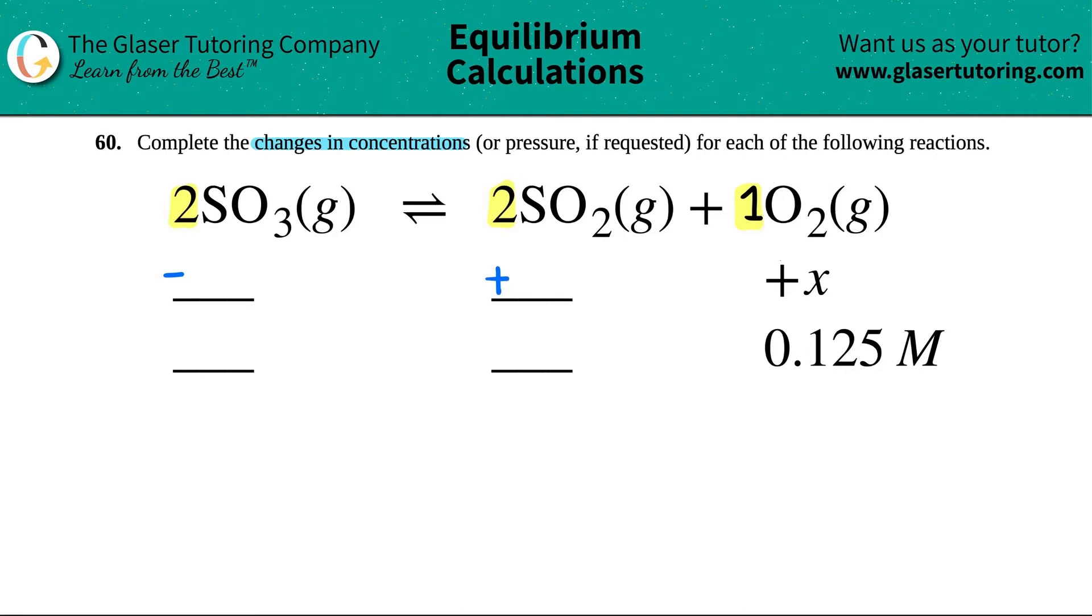So for the O2, since there was 1, it would be plus 1X. And if there's a 1X, we usually don't put the number there. But now since we have different coefficients, we have to put the number in front. So this would be plus 2X, right? Because this was a plus 1X, because the 1 just represents what the coefficient is. So this would be plus 2X, because I have 2 times the amount. And then for this one, it would be minus 2. So minus 2X.